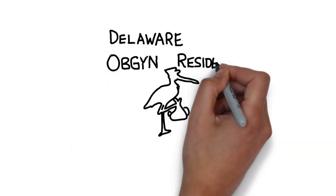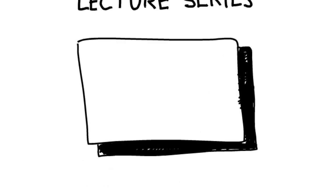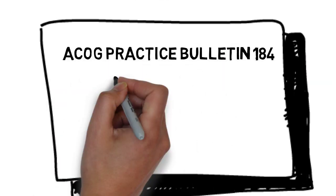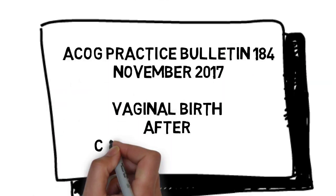This is a summary of the ACOG Practice Bulletin for November 2017 titled Vaginal Birth After Cesarean Delivery. It replaces the one from August 2010.